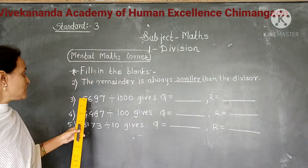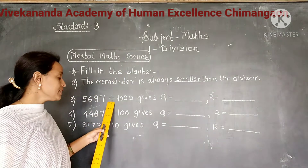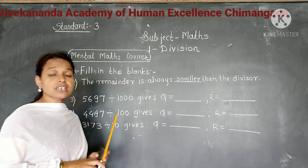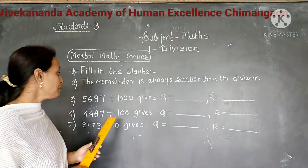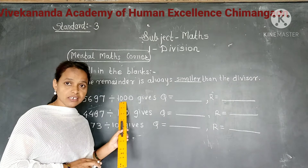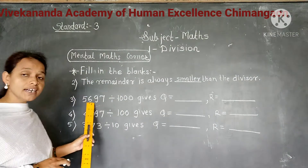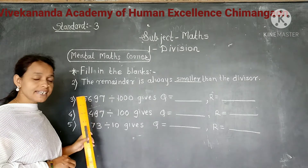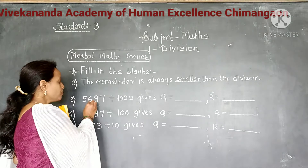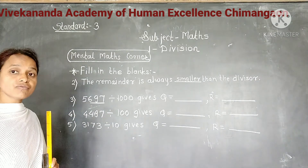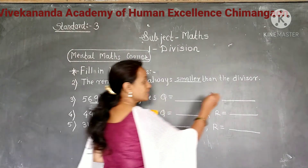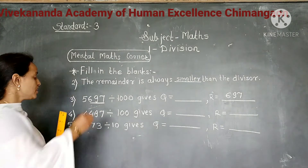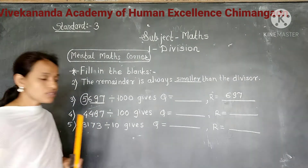Next question: 5697 divided by 1000 gives quotient Q and remainder R. Students, we have learned that when we divide a number by 1000, the digits in the 1, 10, and 100 places together form the remainder. So here, 1, 10, and 100 places together form 697. So 697 is the remainder. And the rest of the digits form the quotient, which is 5.